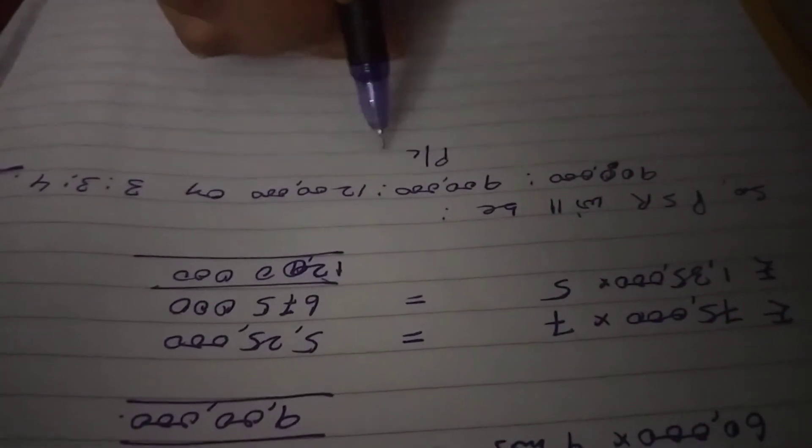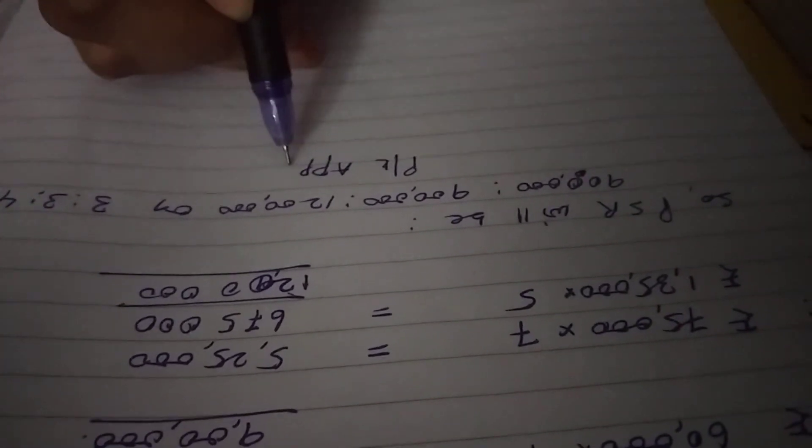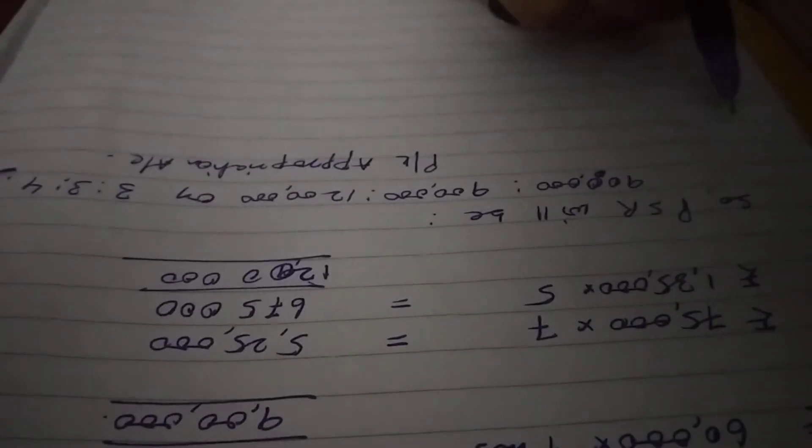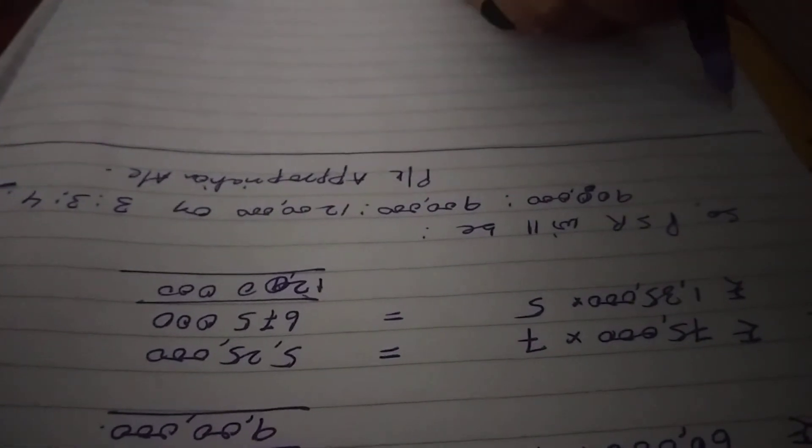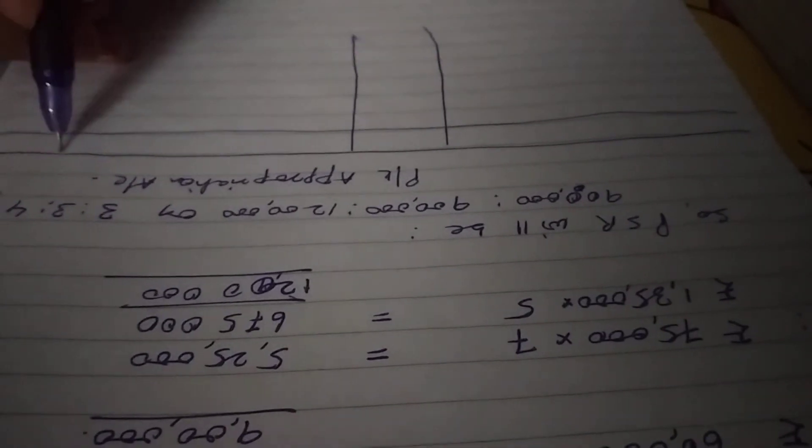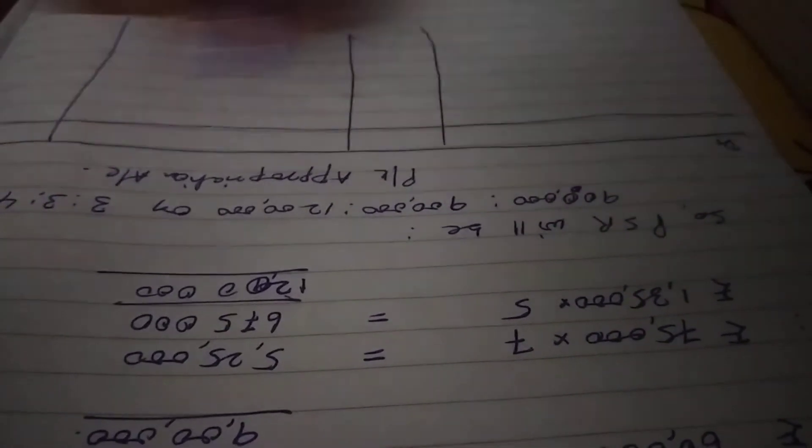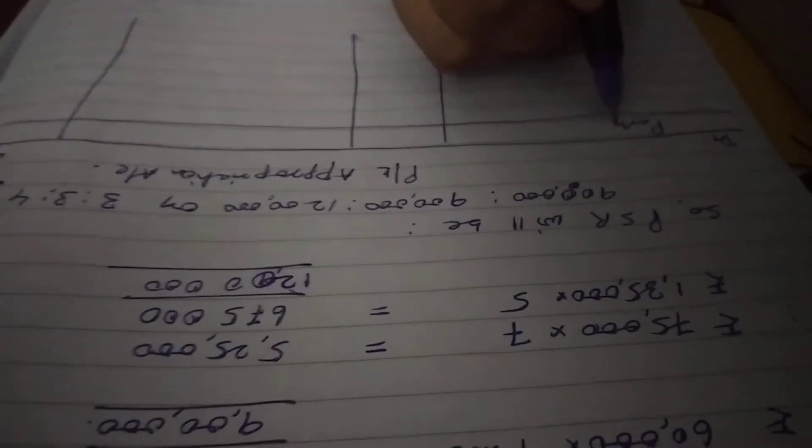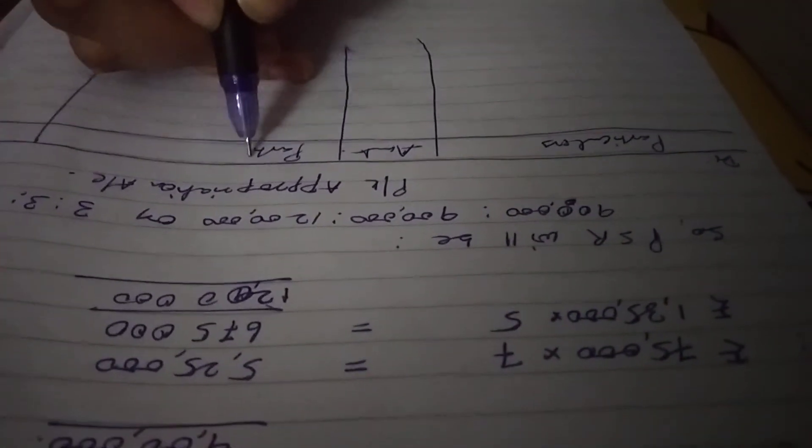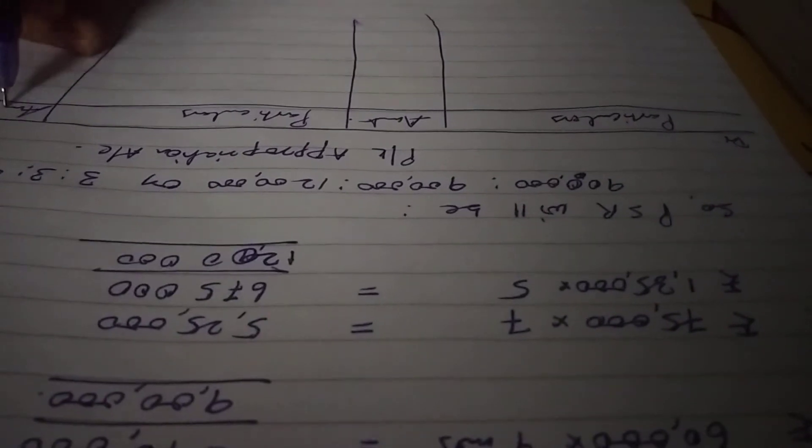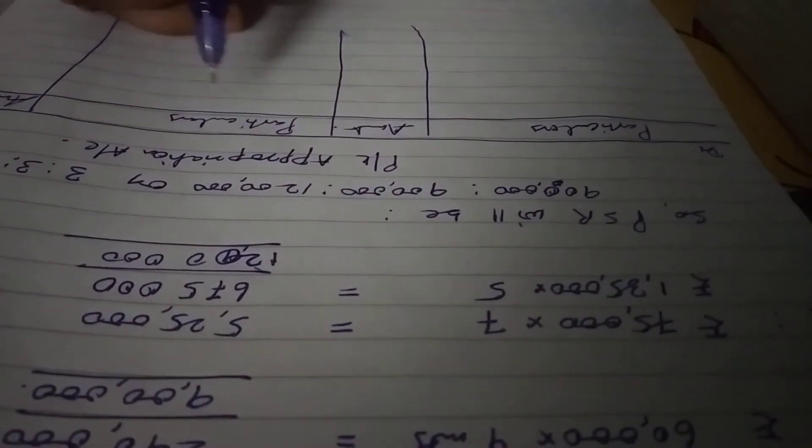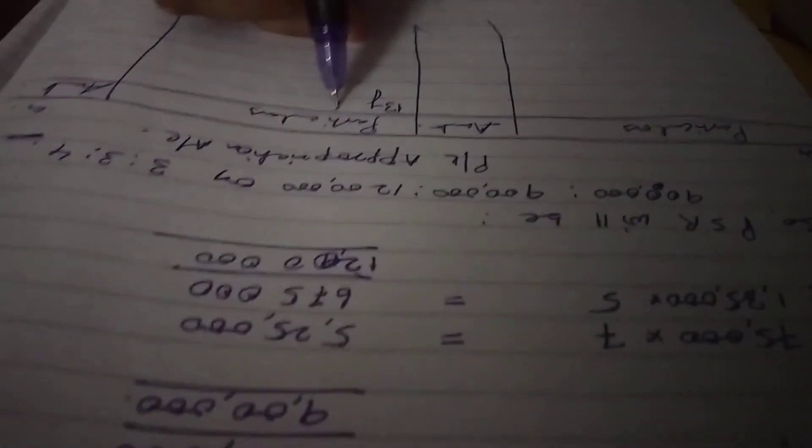Now we have to prepare profit and loss appropriation account. Debit, Credit. Particulars, Amount, then Particulars, Amount.